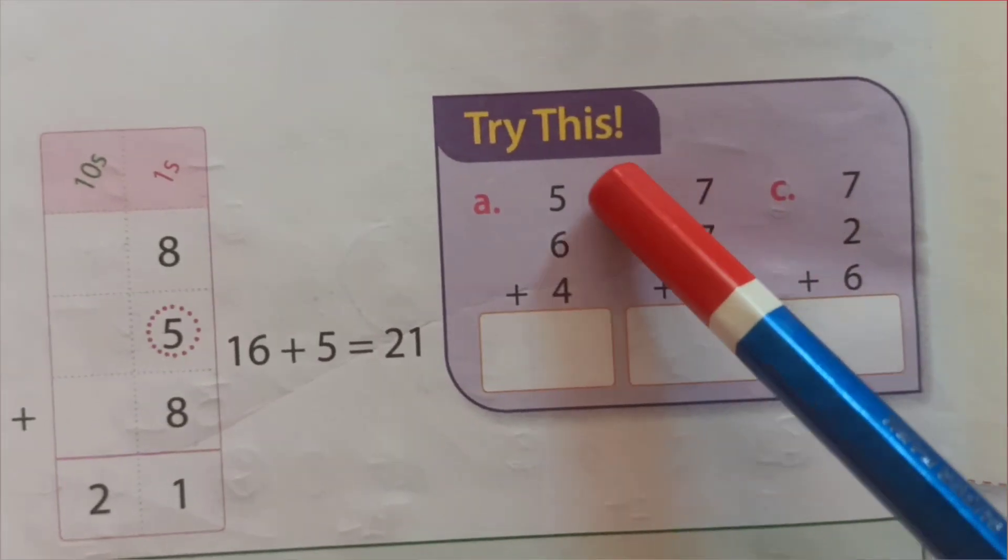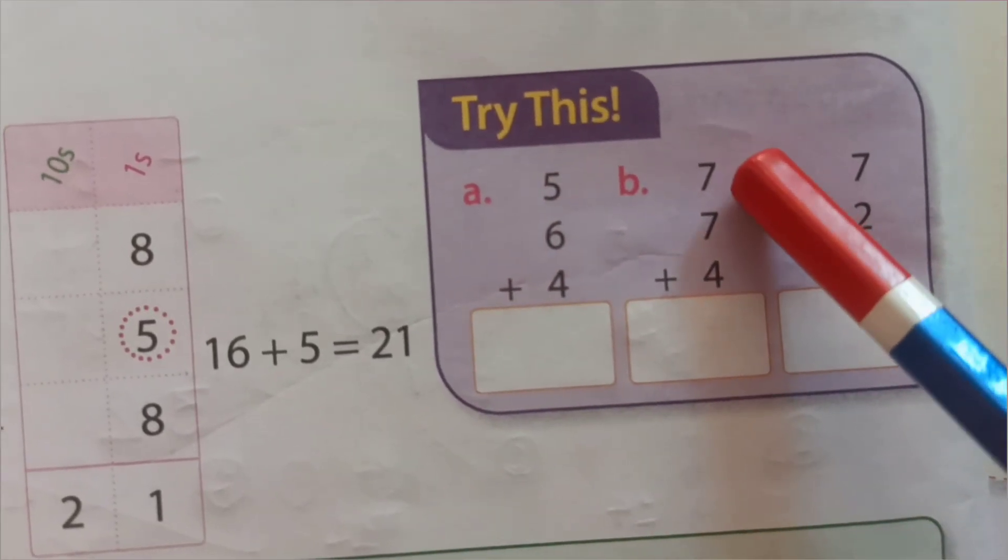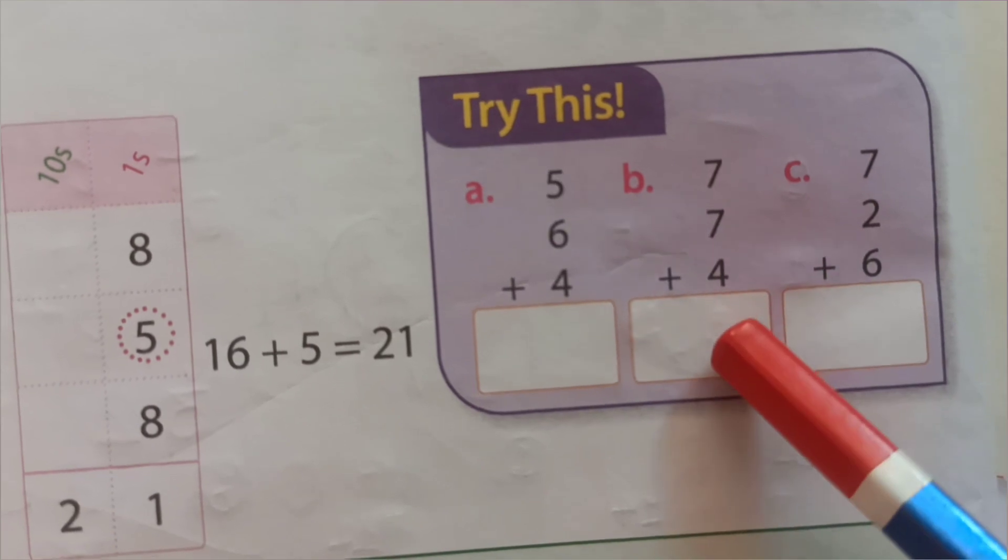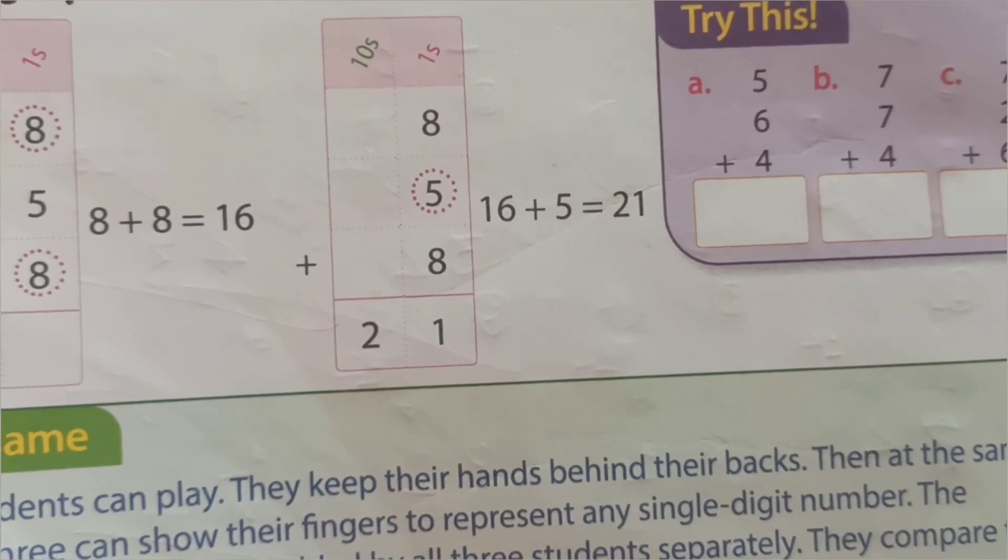See, try this. 5 plus 6 plus 4. Another one, 7 plus 7 plus 4. And third one, 7 plus 2 plus 6.